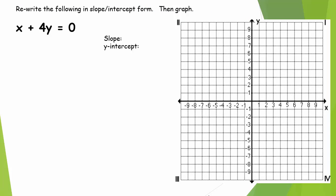The first step is to rewrite in slope-intercept form. We've talked about slope-intercept form being in the form y equals the slope times x plus the y-intercept. m is our slope, b is our y-intercept.